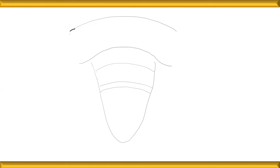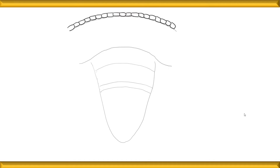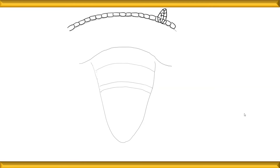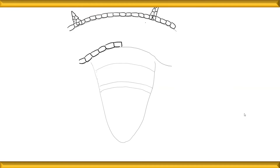Start with the epidermis — draw barrel-shaped cells one after another and extend them across the entire region. Shade over them to show the cuticle. The important structure to highlight is the trichome; since it is multicellular, draw it as a multicellular structure with several cells. Draw two or three trichomes in this section. After the epidermis, move to the endodermis — endodermal cells should be drawn larger because they are specialized to store starch. Draw them across the outline and complete the layer.